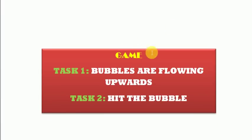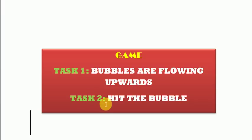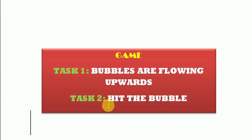Suppose we have to build a game and in that game we have to perform two tasks. The first task is that bubbles are flowing upwards, and the second task is that we have to hit the bubbles. So bubbles are flowing from down to up and from the sideward we have to hit the bubbles. So if we have to make this game, we have to write a program where these two tasks — bubble flowing and hitting bubbles — should be performed simultaneously.